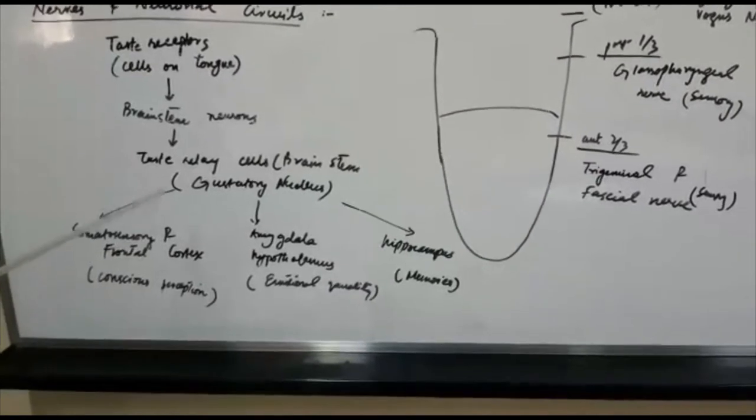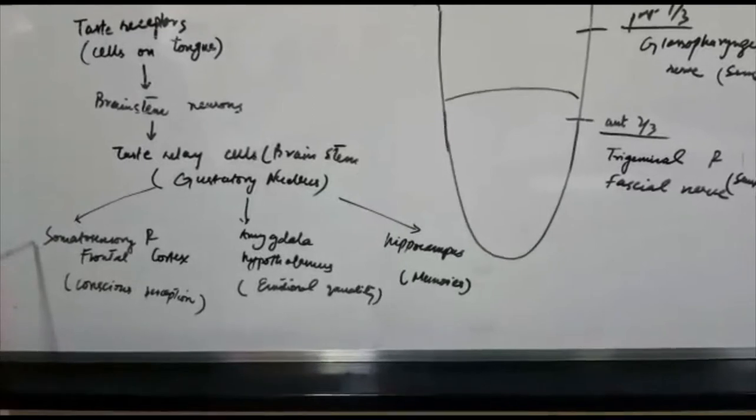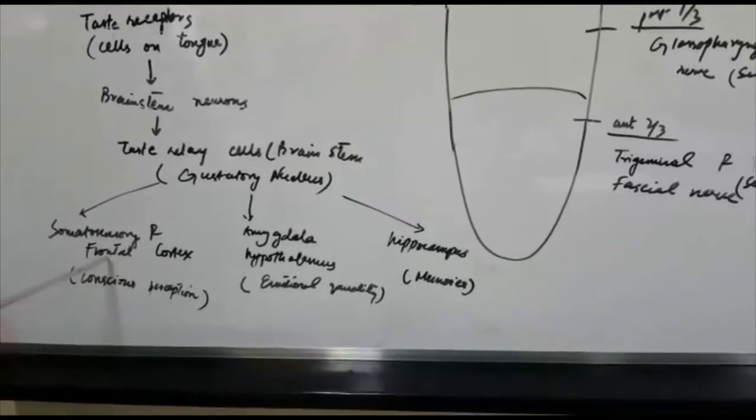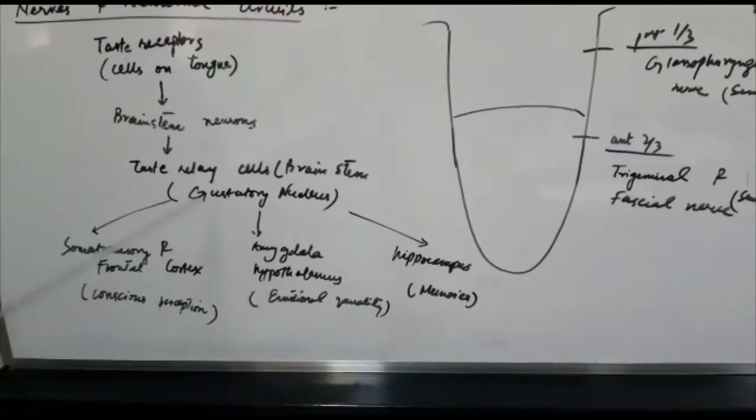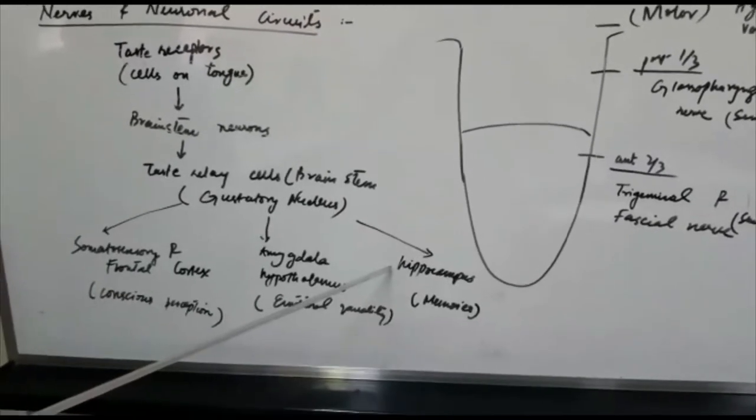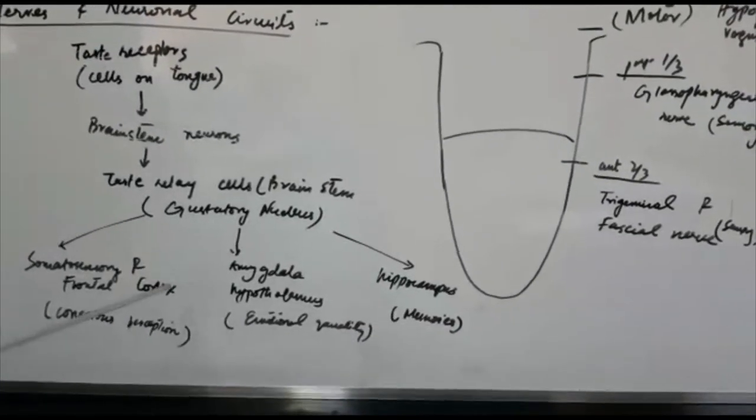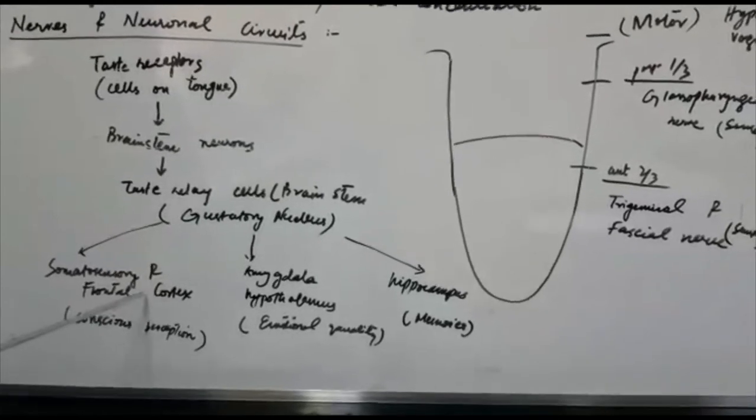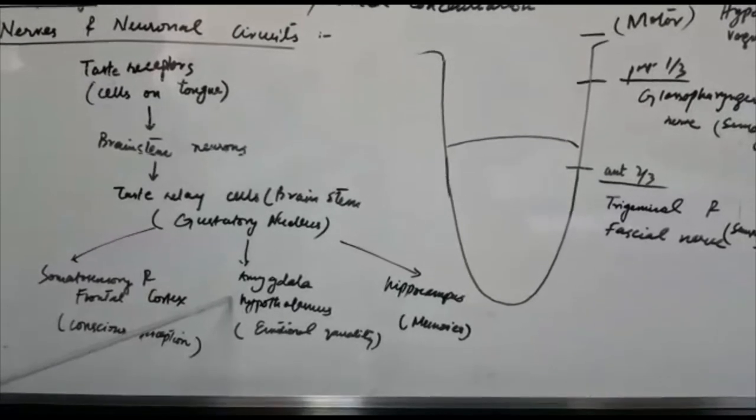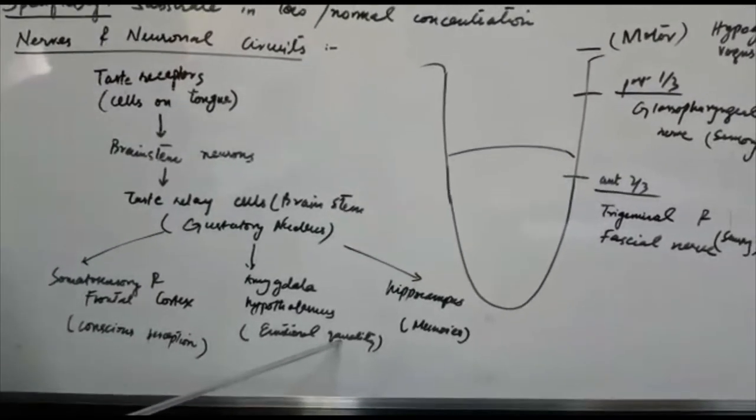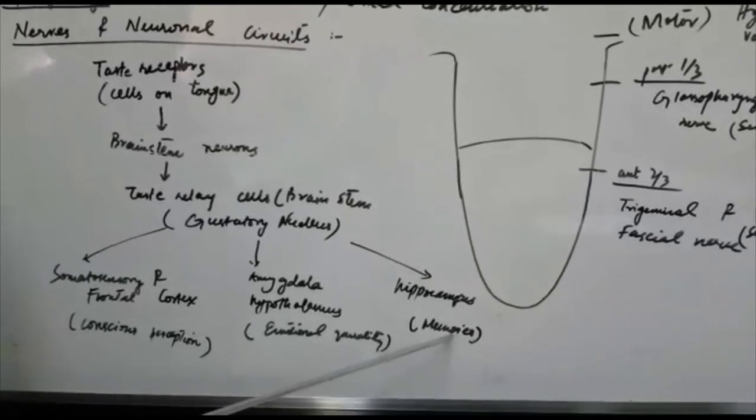After this the signals are transmitted to somatosensory cortex and frontal cortex, amygdala, hypothalamus and hippocampus. These three areas of brain are high centers of the brain which are responsible for separate functions. Somatosensory and frontal cortex are responsible for conscious perception of taste. Amygdala and hypothalamus are responsible for emotional quality related to taste and hippocampus is responsible for memories associated with taste.